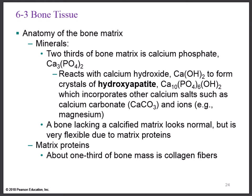Let's take a look at the bone matrix. Bone matrix is made up of minerals and matrix proteins. The minerals make up two-thirds of the bone matrix — so the majority of the bone matrix is the minerals. One-third is going to be the proteins.